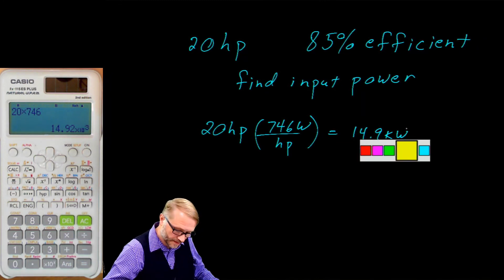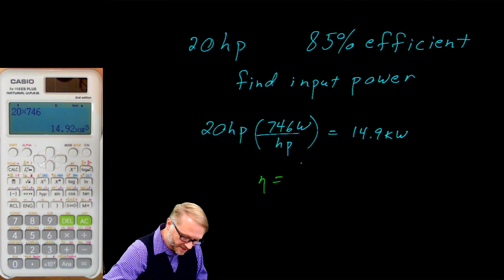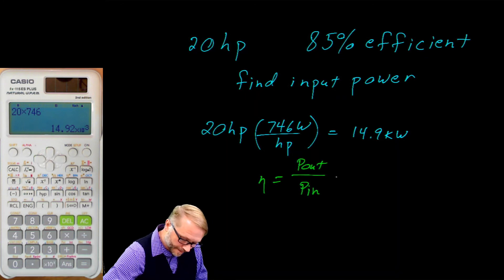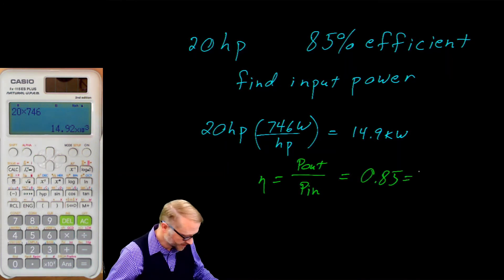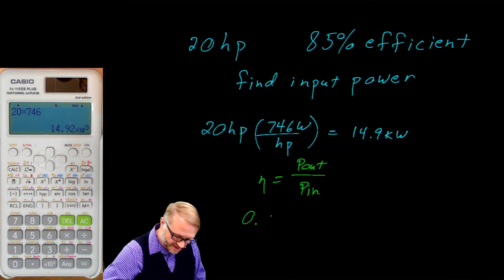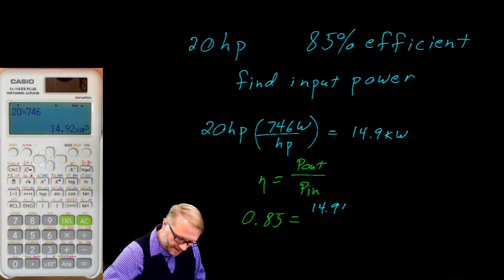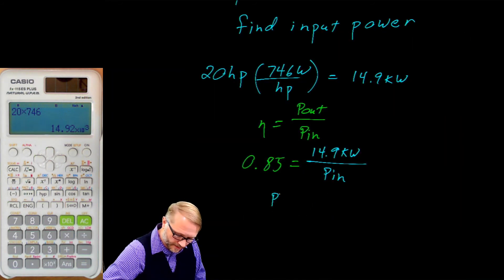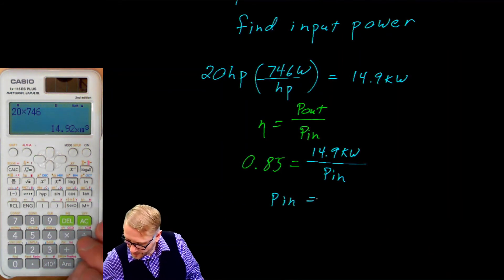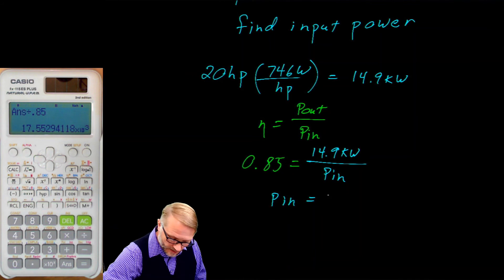Our next step is to remember this equation: efficiency is power out over power in. So we said the efficiency is 0.85, equal to the power out, which we just calculated as 14.9 kW, over the power in. Solving for power in, we end up with 17.5 kW.